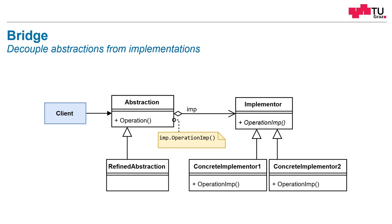What does this mean? For example, we, as a client developer, we want to implement, let's say, a Windows application, and we want to have some graphical user interface for that. We want to use some buttons and some text boxes or some containers and so on. And all these components define some abstraction layer — not only one class, but a whole layer of classes, a whole family of components.